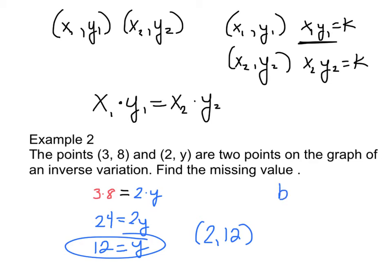Why don't you try this one on your own? Figure out the missing value of y if our two points are (3, y) and (5, 9). What would the value of y have to be? Hopefully, if you figure this out, you would have the equation 3y equals 45 and therefore you get y equals 15.